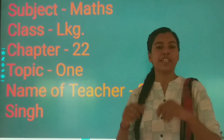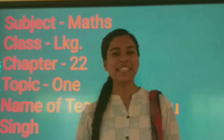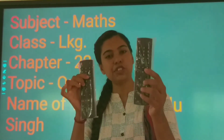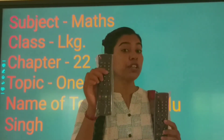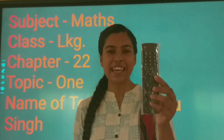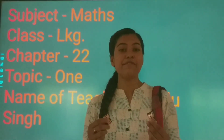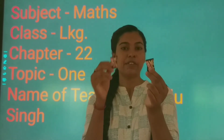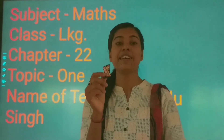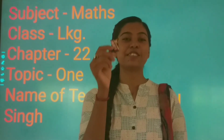The next number you will learn is one. Children, I am having two remotes — one and two. If I give one remote away, then how many remotes are left? Yes, one. If I am having two candies, one and two, and I give one candy to Nitya, then how many candies are left? Yes, one candy.